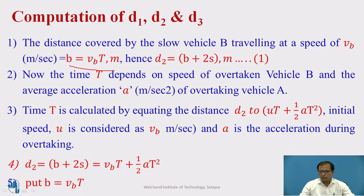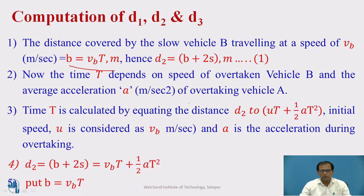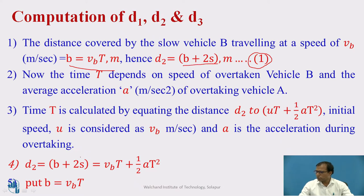To calculate T, we know it depends on the speed of the overtaking vehicle and the average acceleration A in meters per second squared. Using the second equation of linear motion — s equals u·t plus half a·t squared — we equate D2 to this expression. Equating B plus 2S equals u·T plus half·A·T squared.